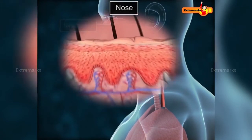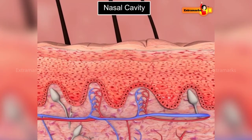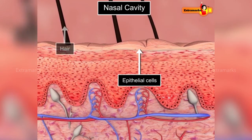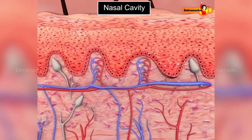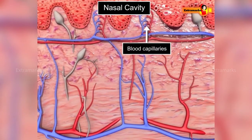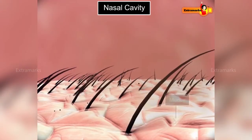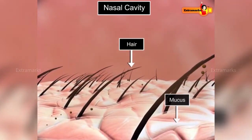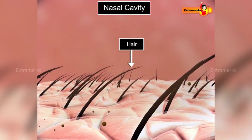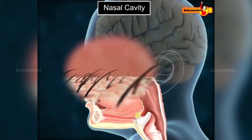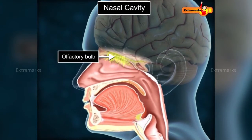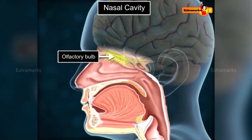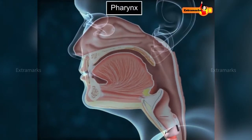Nasal cavities are internally lined by specialized epithelial cells and tiny hairs. These cells are supplied with a network of blood capillaries and secrete mucus to moisten the inhaled air. Nasal hairs filter dust particles, while blood capillaries warm the air. The nasal cavity also has olfactory bulbs located at the top, which detect the odor of air entering the nasal cavity.